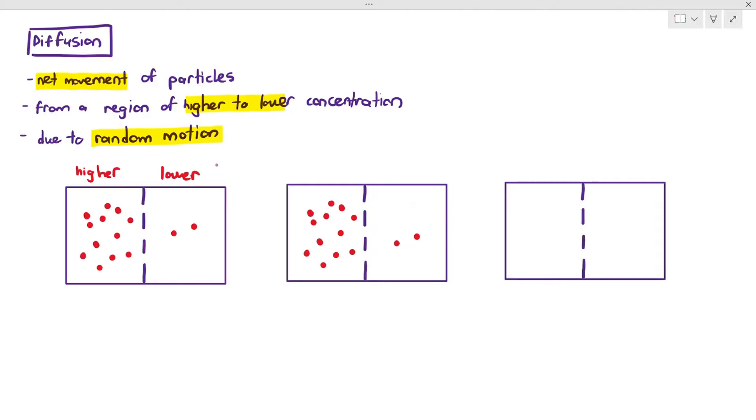So what will happen is, due to the nature of particles in our universe, they will always diffuse from an area of higher to lower concentration.